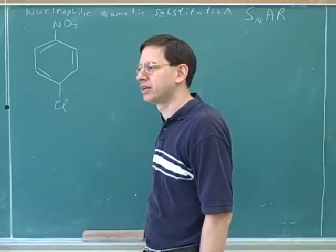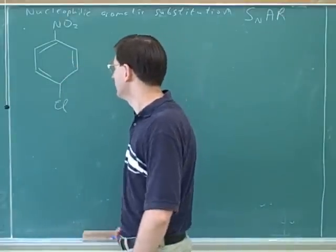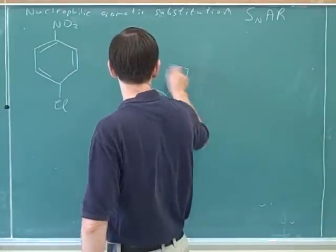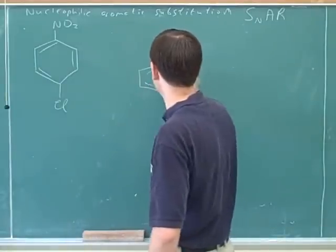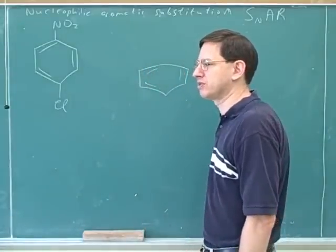Well, how would you get the Cl on in the first place? Well, you tell me. By electrophilic substitution. That's right. You could get the chlorine on by an electrophilic aromatic substitution.